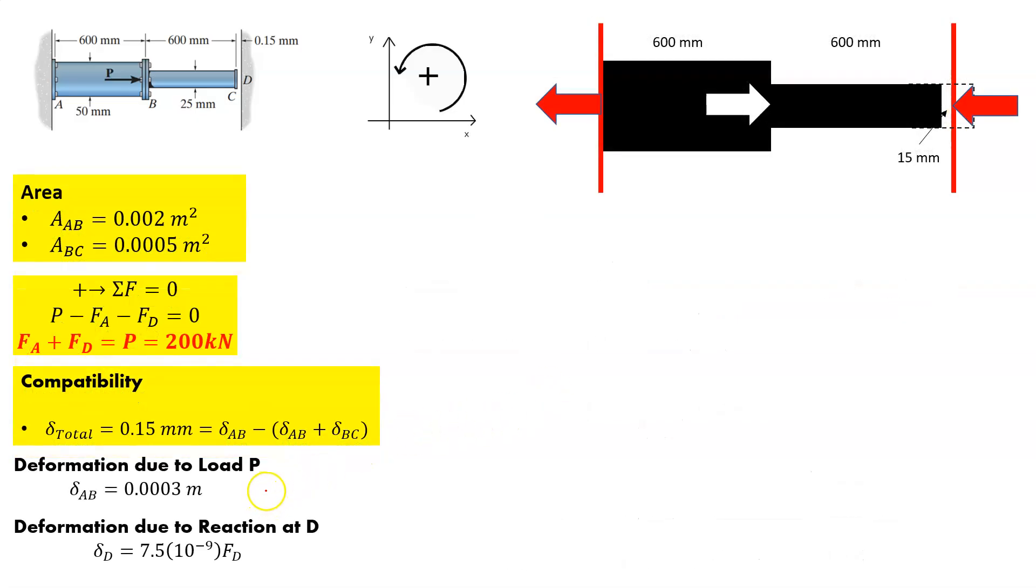So now we also can take into account that compatibility equation. So the compatibility equation, this is why that's so important. It's 0.15 millimeters. Again, we know that that compatibility condition is basically the difference between how much this is going to go in one direction minus the force reaction from the other direction. We know that's going to come out at 0.00015 meters. Let's put this in the meters just to make it easier on myself.